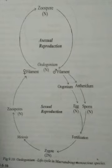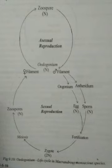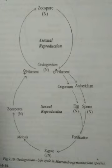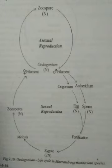The cell is eukaryotic and cylindrical. The protoplasm contains a reticulate chloroplast, a nucleus, and a vacuole. The nucleus is large and spherical, with one or few nucleoli. The chloroplast contains major pigments like chlorophyll A and B, carotene, and xanthophyll. The reserve food is starch, which occurs in starch plates around the pyrenoids.